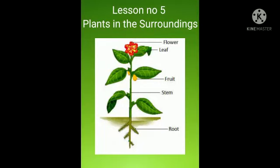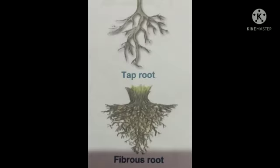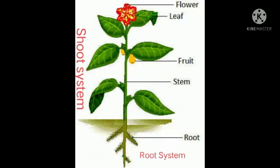Hello dear students, today we are going to start with our lesson number five: Plants in the Surrounding, Part Two. In the first part we discussed that a plant mainly consists of two parts: a root system and a shoot system. A root system comprises roots, of which there are two types — tap and fibrous roots — and we discussed the functions of roots. Now in this video we are going to discuss the functions of the parts present in the shoot system.